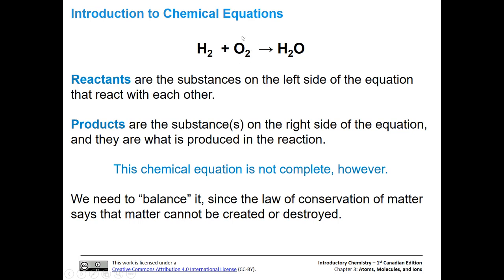In our chemical equation, reactants are on the left side. These guys react with each other, and products are on the right side — that's what is produced in the reaction. We might think we're finished with this equation, but we are not. We have a situation where oxygen is destroyed in the reaction, and the law of conservation of matter says that cannot happen. There are two oxygens on this side and only one oxygen on that side — so where did the other oxygen go?